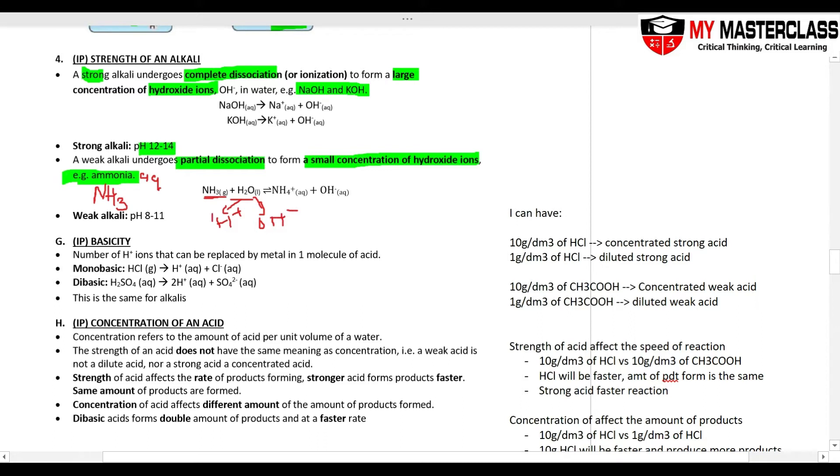So ammonia, think ammonium, the H comes to here, the NH4+, will partner the whatever is left behind, OH-. So partial dissociation, use your reversible arrow, you have some hydroxide ions. And this is your weak alkali, pH is 8 to 11.